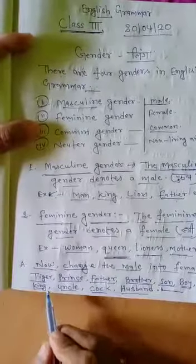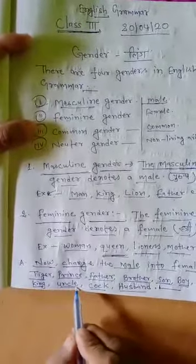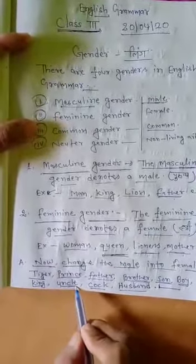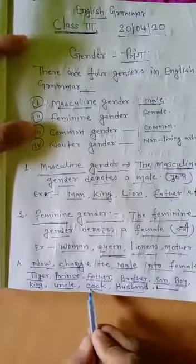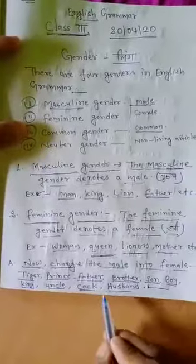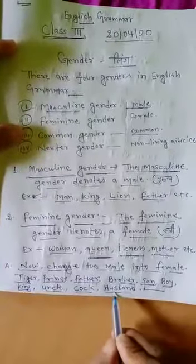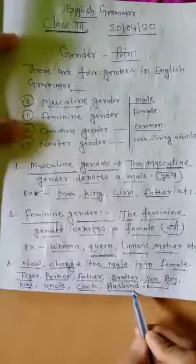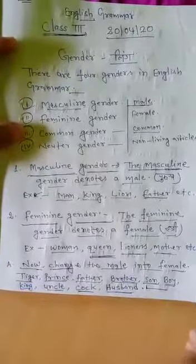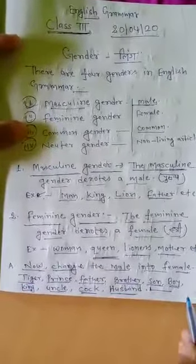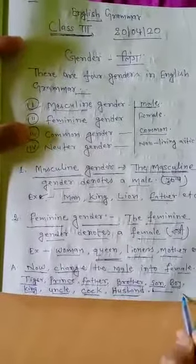Husband — wife. Uncle, chacha — aunt, chachi. Cock — hen. Mother — mother. Husband — wife. Okay.